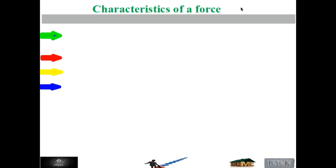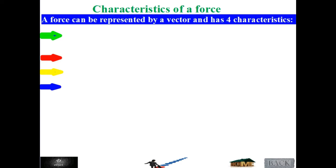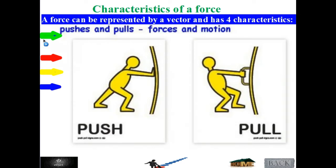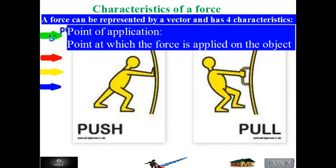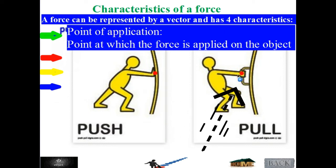Characteristics of a force. Of course we can represent the force by a vector, and each vector has four characteristics. We have here two pictures — one pushing the door and the other is pulling the door. The first characteristic of the force is the point of application: the point at which the force is applied on the object. Here the pushing is applied between the hand and the door, and also here the point of application is between the hand and the handle of the door.